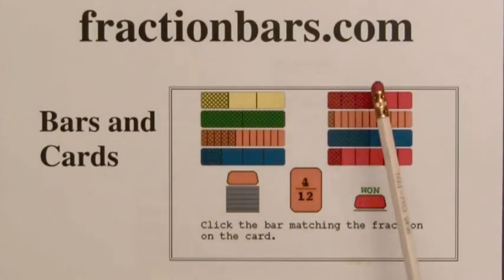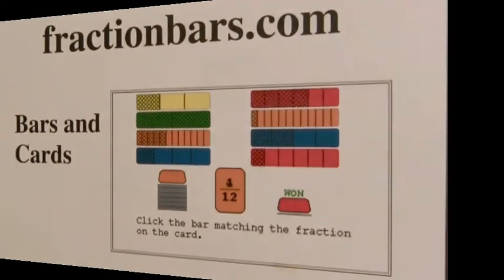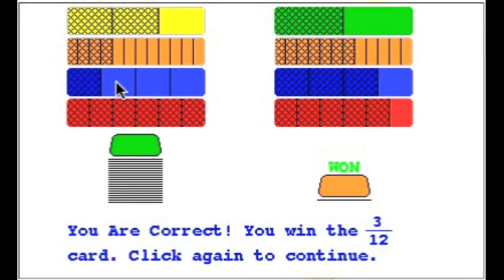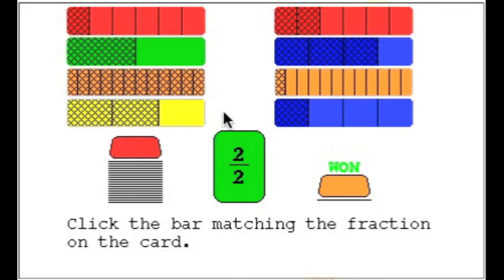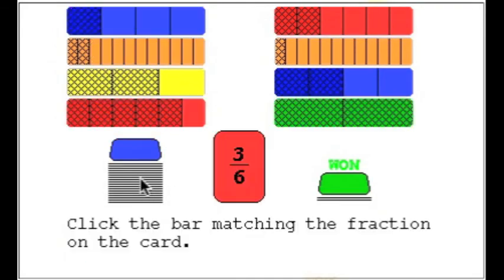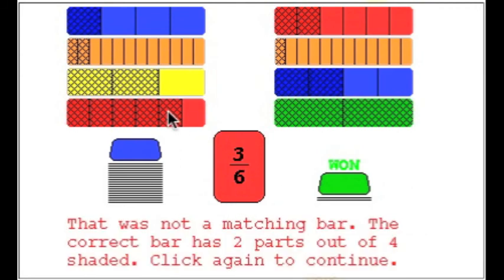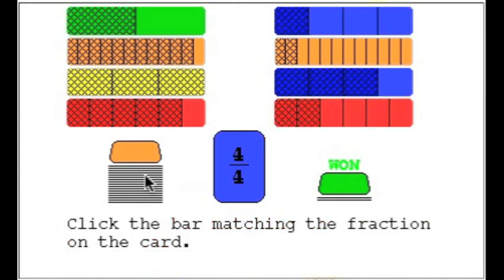The second game from this website is bars and cards. In the game bars and cards, the student is given eight bars and a fraction playing card. The object is to select the bar whose fraction equals the fraction on the playing card. The player has won two cards at this point. There are twenty cards in the deck on the left, and the number of cards won are on the right. The object is to see how many cards you can win.